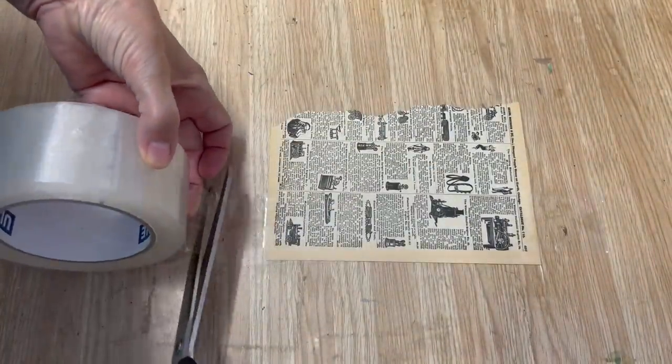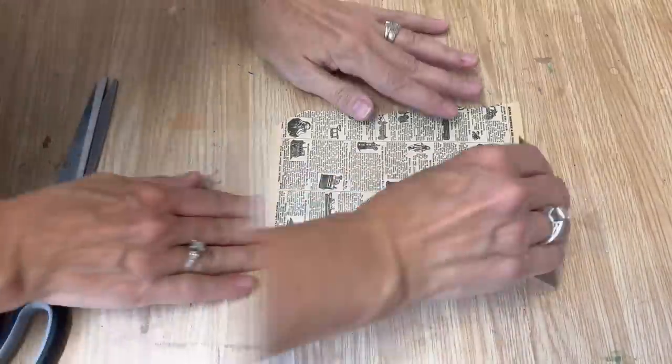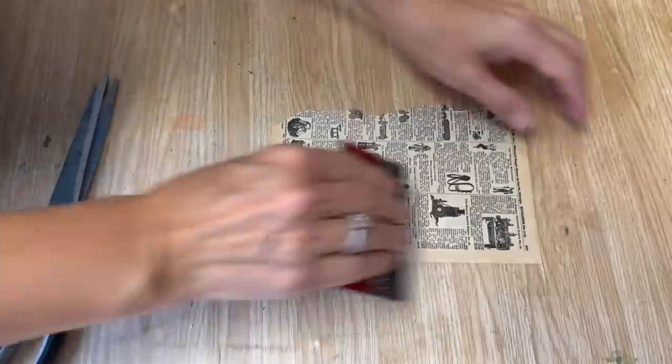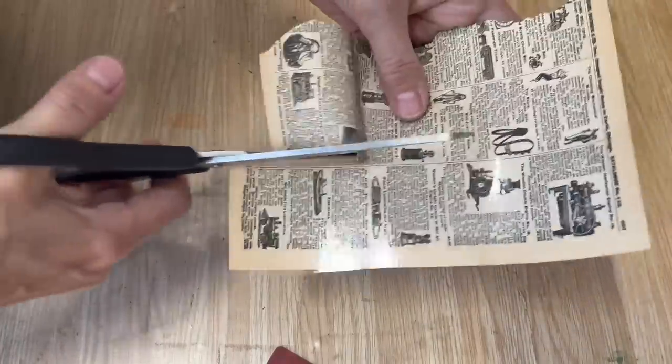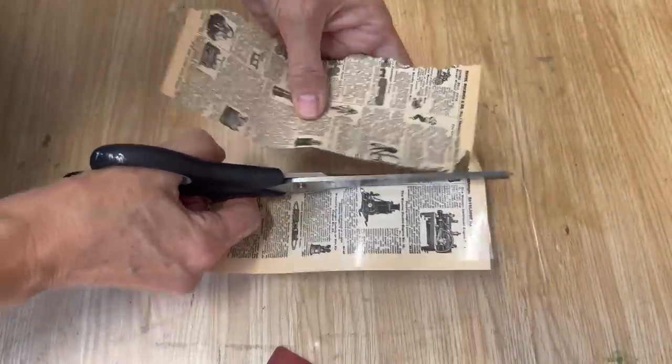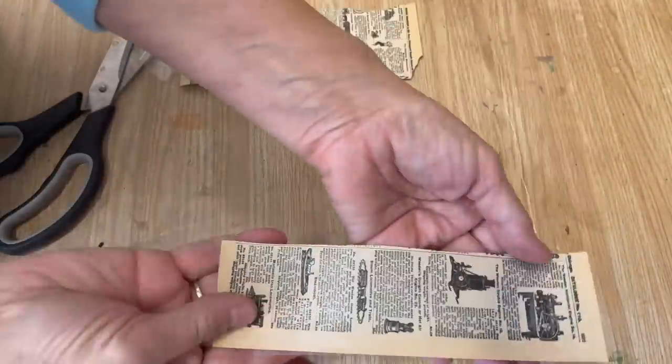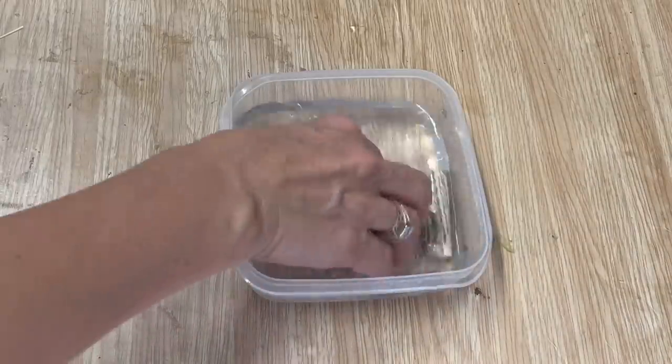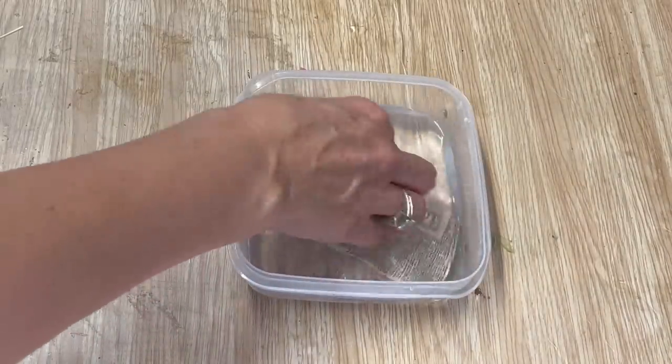Once you have all the bubbles and wrinkles off, you can trim around the edges. Then we're going to put it in some water and we're going to soak this piece of tape with the magazine page in it.